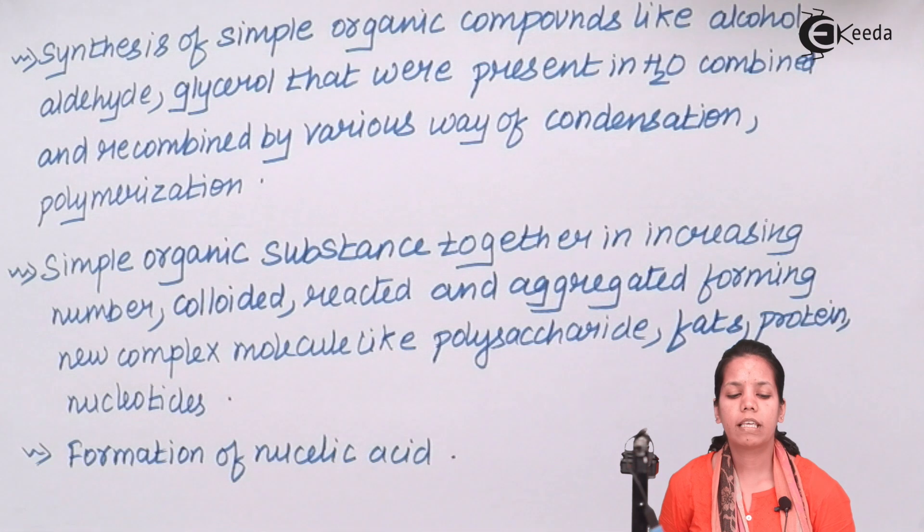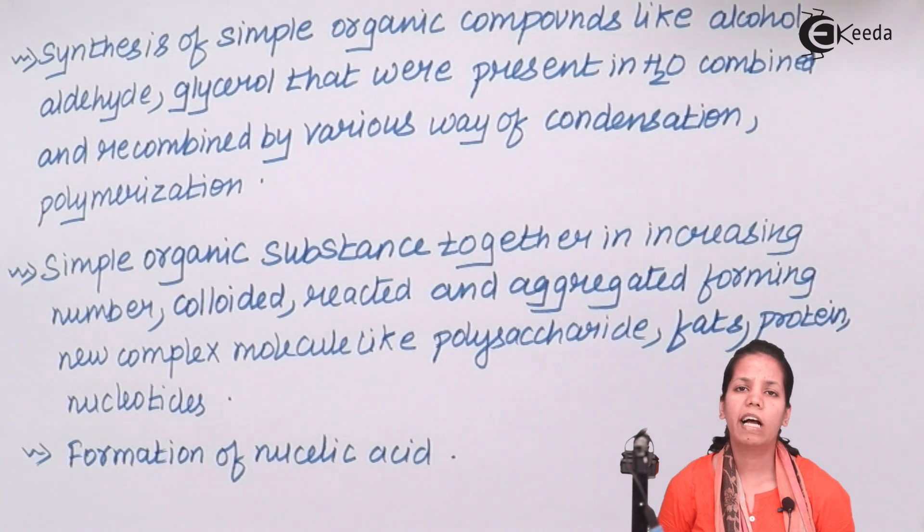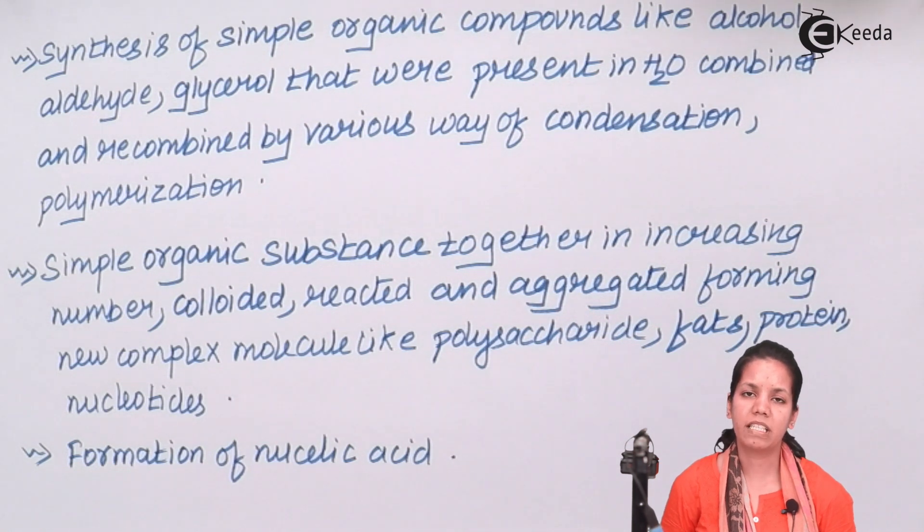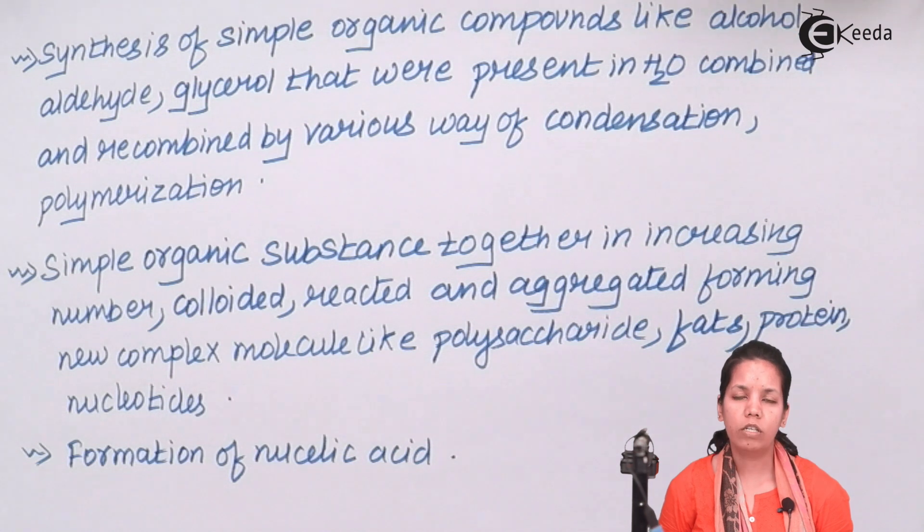So students, according to chemical theory, the formation of life on earth basically depended on aggregation or accumulation of molecules, how various molecules aggregated or accumulated and finally after going through series of reactions like condensation, polymerization, finally certain molecules were formed which ultimately gave rise to life on earth. So I hope students we are very clear with this concept. Thank you.